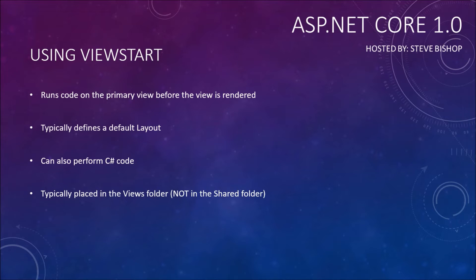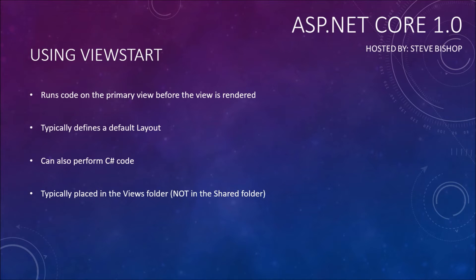A view start is something that we want to try to find ahead of time, and as such, by convention the Razor view engine is going to be looking at the hierarchy of the view folder structure. It's first going to look inside the subfolder for a view start file. So if we're running the customers controller and we're looking for a view inside of that subfolder for the customers controller, it will first look for a view start file in that customers subfolder. If it cannot find one, then it will look to the root of the views folder.